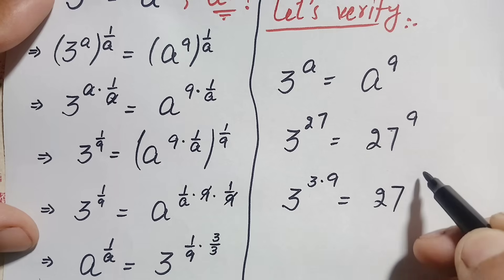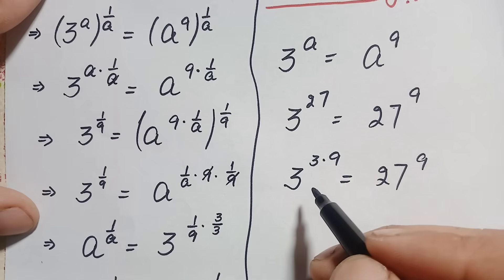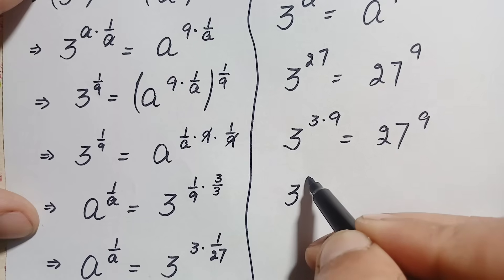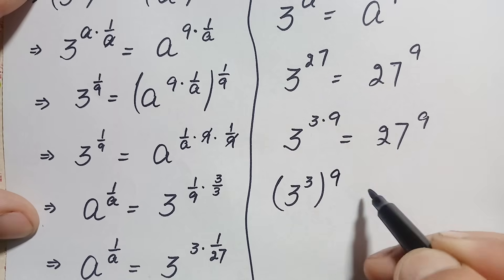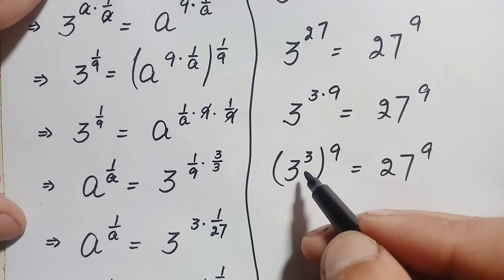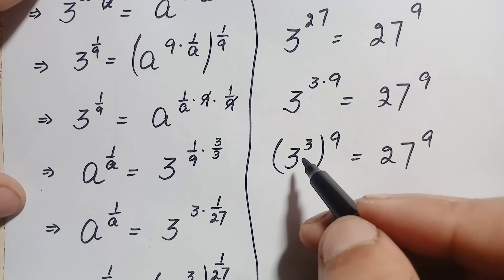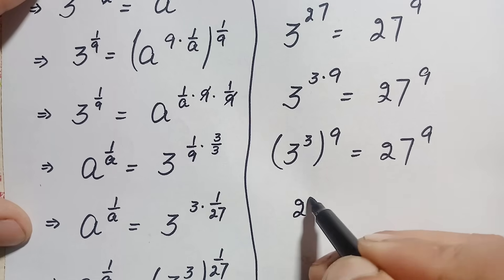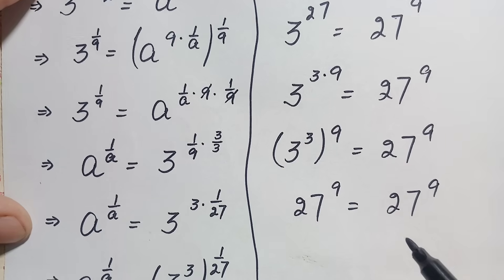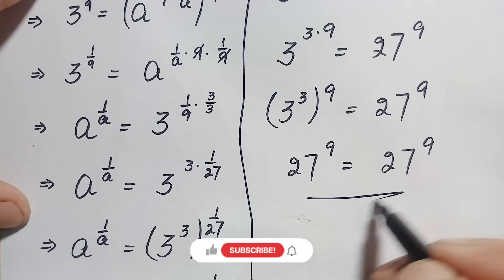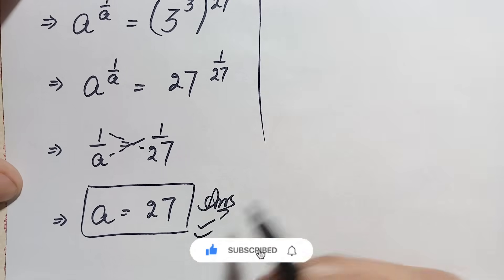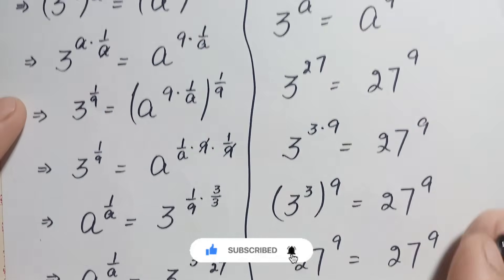Using the exponential identity on the left hand side, this becomes 3 × (2^3)^9 = 8 × 2^9. Since 2^3 = 8, we get 3 × 8^9, wait — this simplifies to 27^9 = 27^9. Since both sides are equal, a = 27 is confirmed as the exact and correct value of a in this problem.